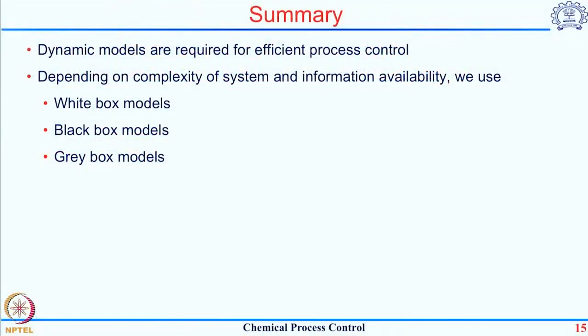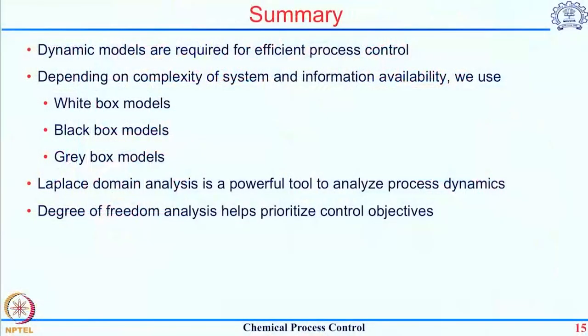To summarize this second part of the first week's lecture: dynamic models are required for efficient process control because they give us the way the system behaves, which can later be used to design a control strategy. Depending on the type of system, any one of first principle (white box) model, empirical (black box) model, or gray box model can be used — these are the 3 different ways to formulate a dynamic model, and depending on system complexity one may be better than the other. We typically represent all dynamic models in the Laplace domain because it simplifies analysis and controller design. Finally, degree of freedom analysis is carried out before starting any control work because it gives an upper limit on how many control objectives can be satisfied for that particular process. Thank you.